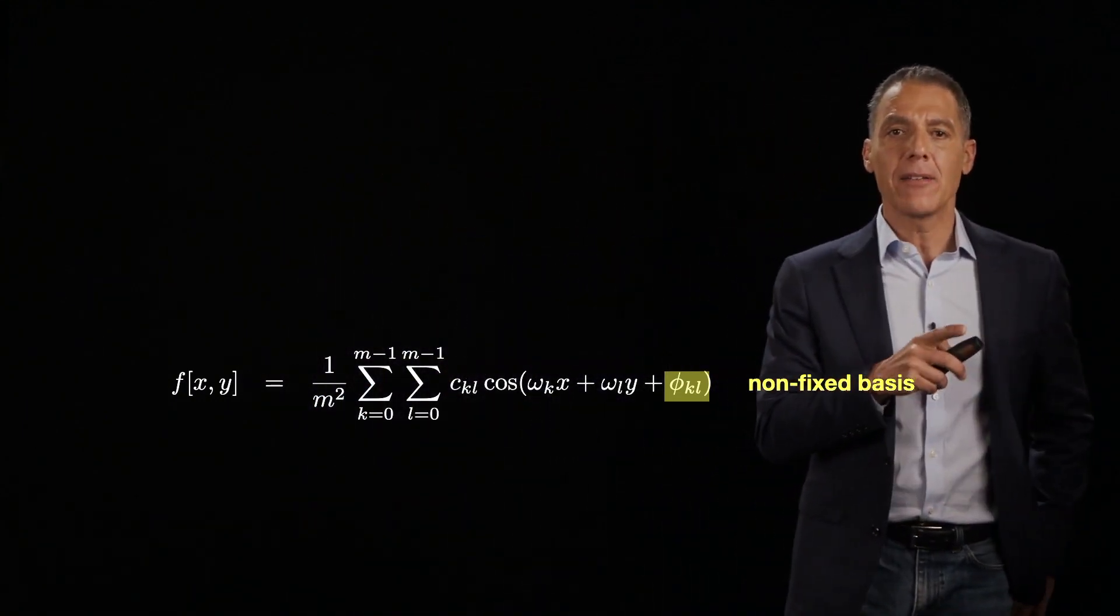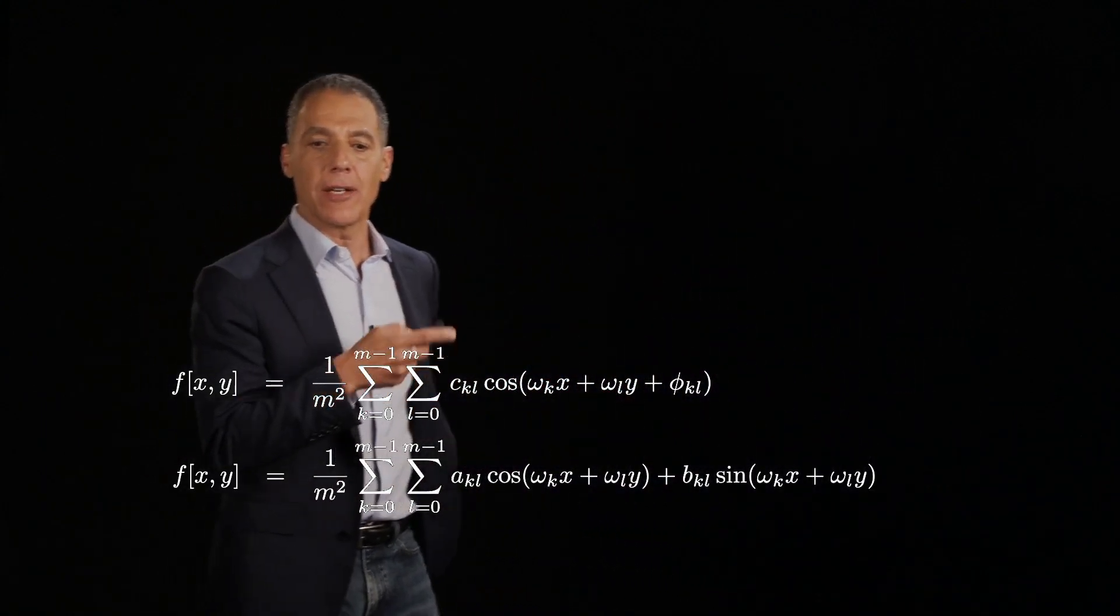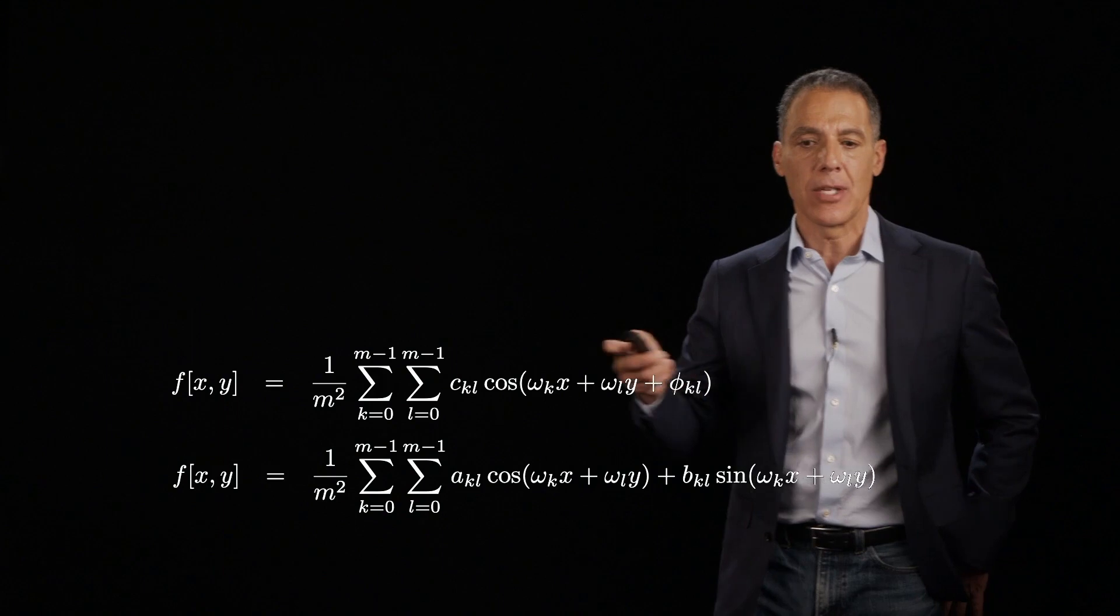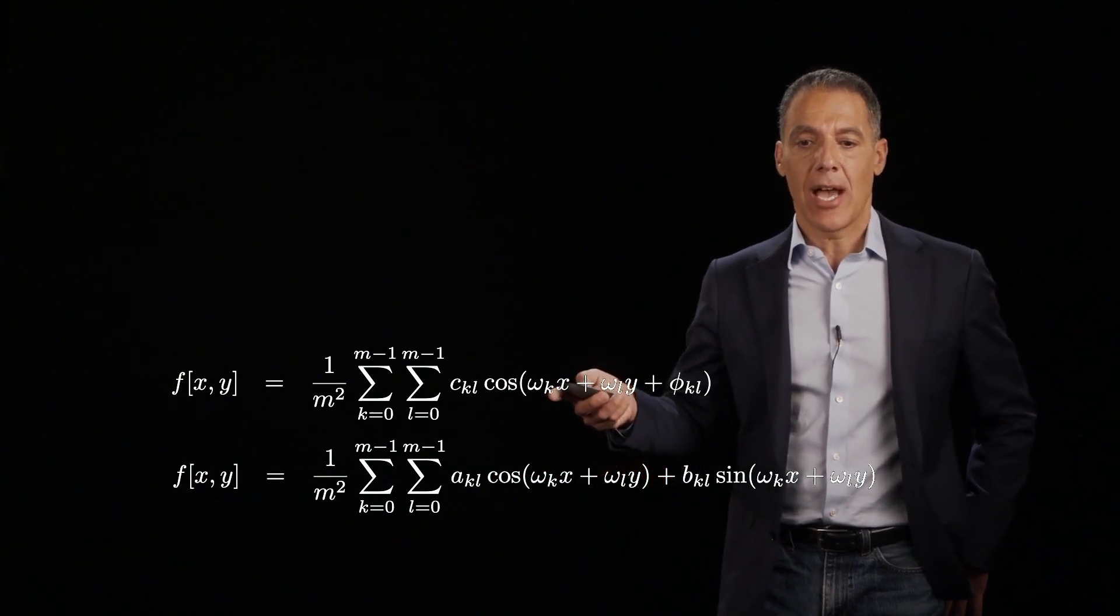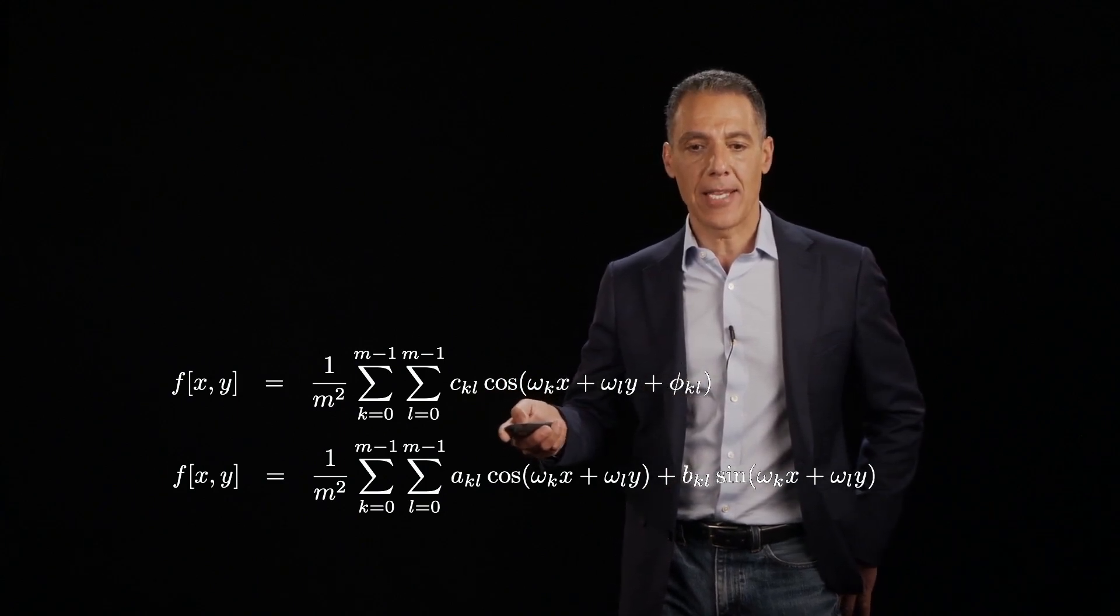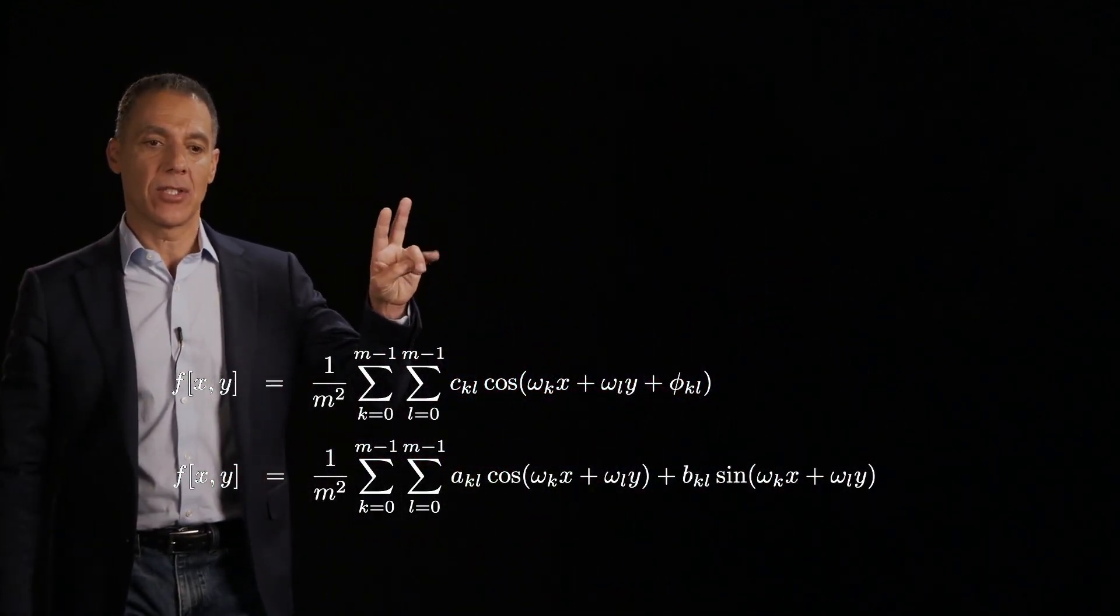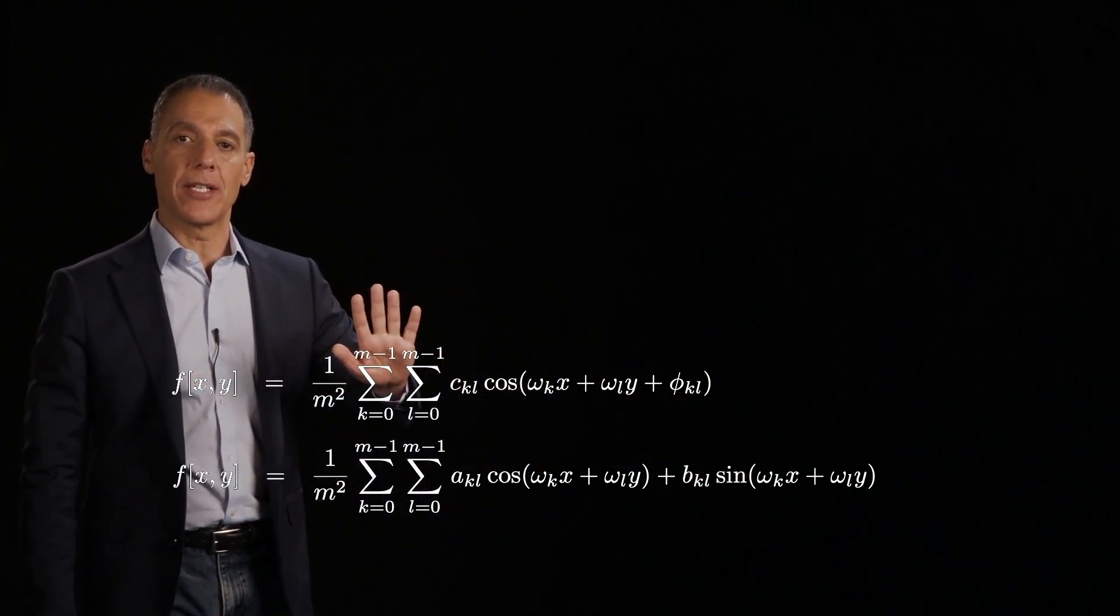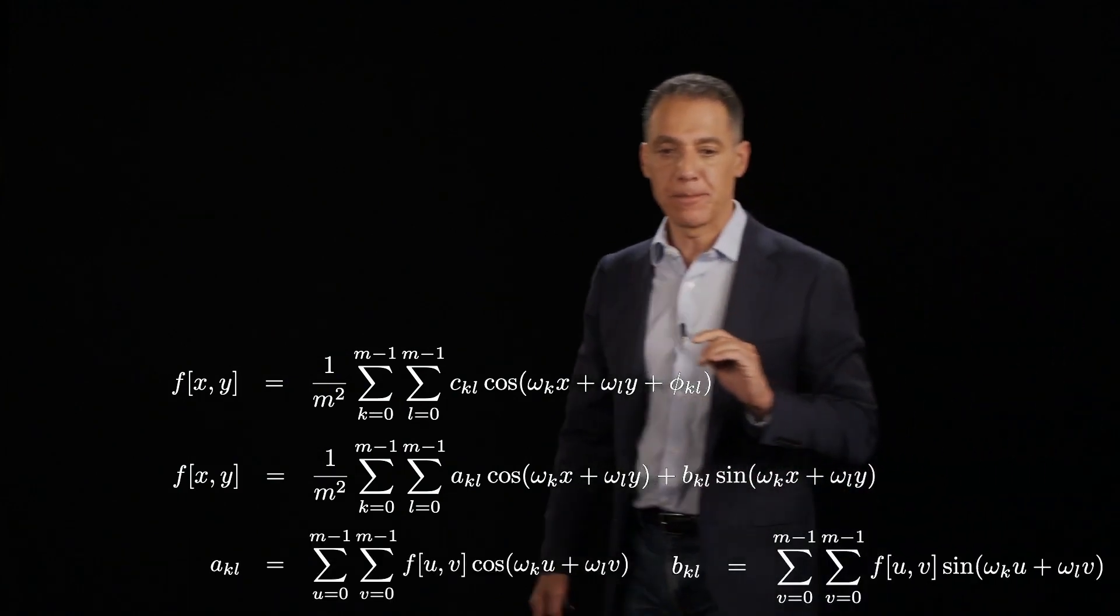So we have the same problem. We have a non-fixed basis. So how do we fix it? Let's go back to our old friend, the trig identity. Cosine of the sum of two things is equal to the cosine of one times the cosine of the other minus the sine of one times the sine of the other. And now I can rewrite this 2D Fourier series like this. And what I've done is I've simply factored out the phase term. And since that's a constant, I've folded it into that A sub KL and B sub KL. And now I have a fixed pair of bases, cos and sine, that are only frequency modulated, but not phase modulated. So it is now a fixed basis, the same way we did in 1D.